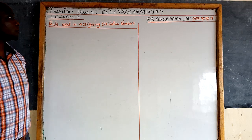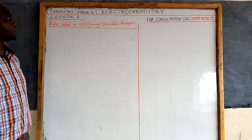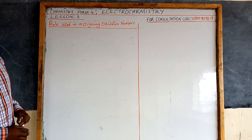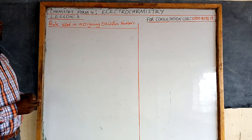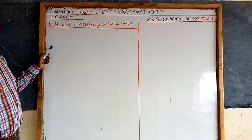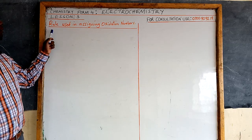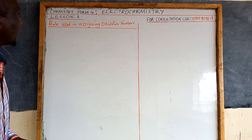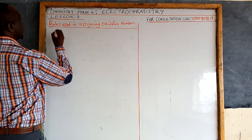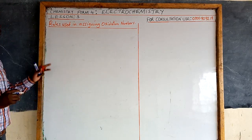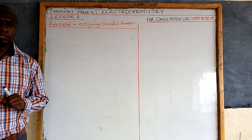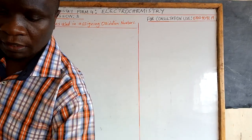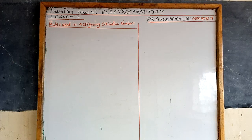Hi, welcome to lesson number three, American chemistry. In our lesson today, we are going to look at the rules used in assigning the oxidation numbers. Let me just project those rules on your screen, then we discuss them and then we do some examples.